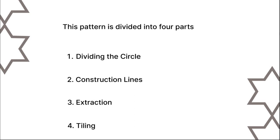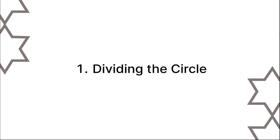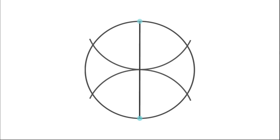First of all, draw a circle and split it into two halves. After that, put the compass on blue dots and draw two arcs. Now draw a horizontal diameter line and again draw two arcs with blue dots as reference.